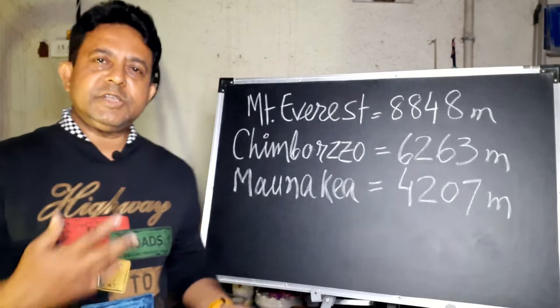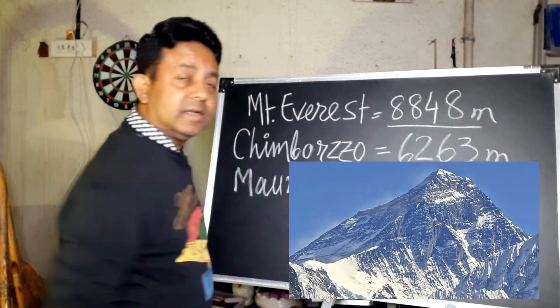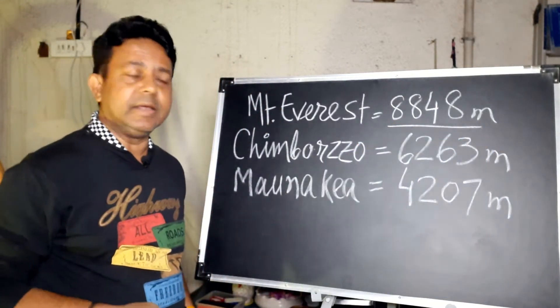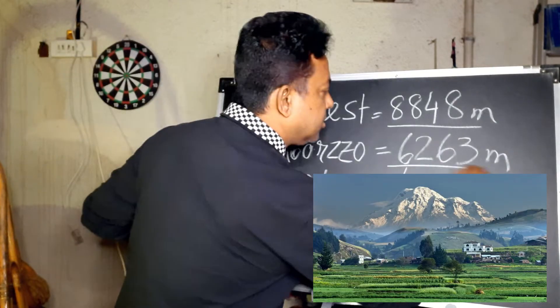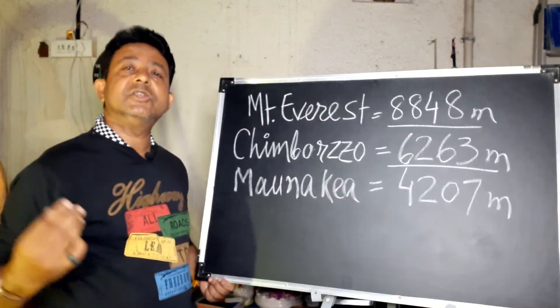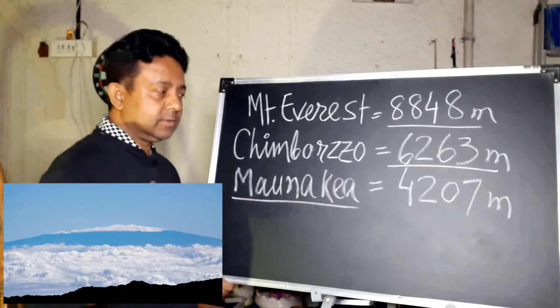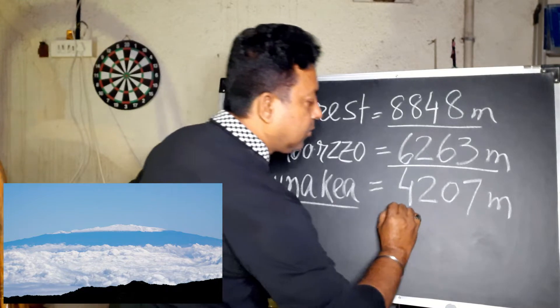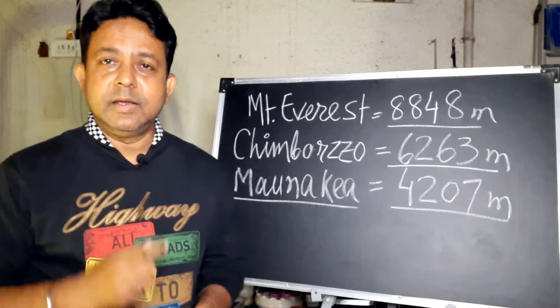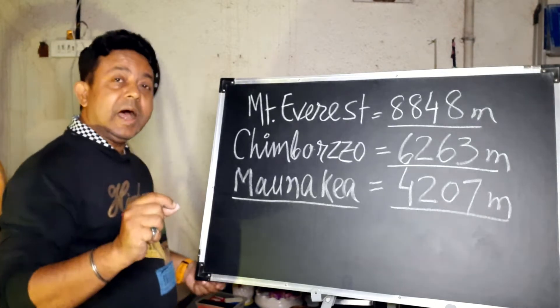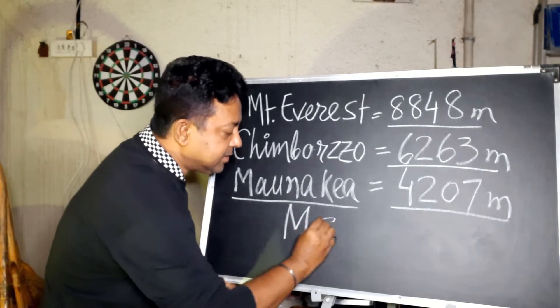You see, Mount Everest is 8848 meters high, and Chimborazo is about 6263 meters high, and Mount Monakia in Hawaii is about 4207 meters high. But all these heights are with reference to global mean sea level.